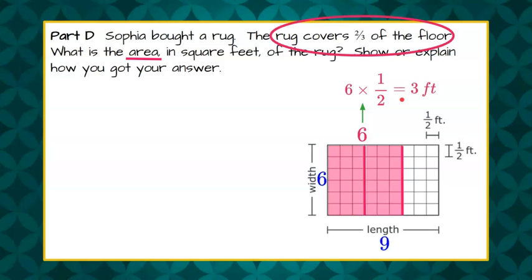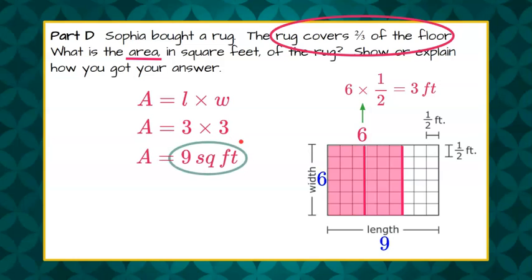is three feet. So our rug is going to be three feet by three feet. So when we go to find the area, our length and width are both three feet. Three times three is nine. So our area of our rug is nine square feet. And that's the answer to part D.